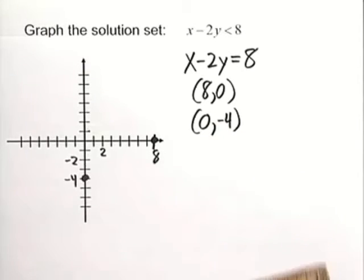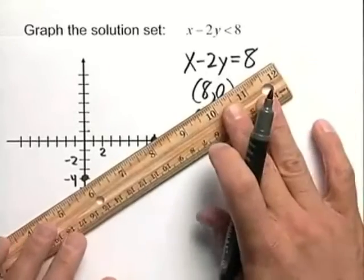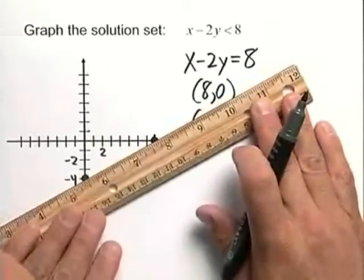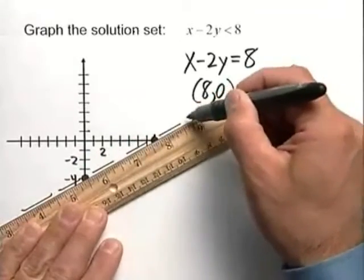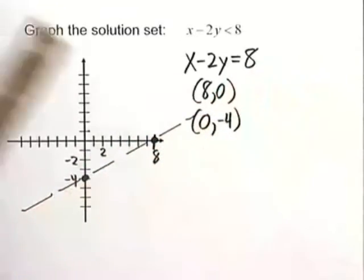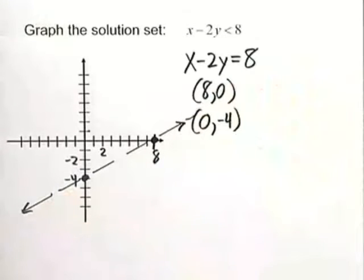Now one thing you have to be careful about when you're graphing the boundary line here is because we have strictly less than, we have to use a dotted line to represent the fact that points on our boundary line are not included in our solution. So that's a very important part of graphing linear inequalities.